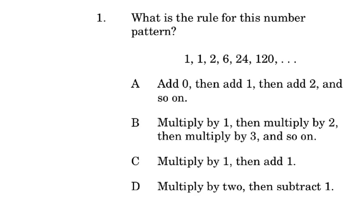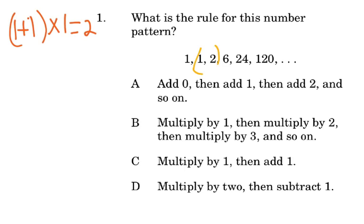What is the rule for this number pattern? We're looking at a sequence question, so we're going to look at the relationship between the terms. So 1 plus 1 times 1 will give us 1 plus 1 equals 2, and 2 times 1 will give us 2. Now taking the next two: 1 plus 2 times 1 more than 1 will give us 2. 1 plus 2 gives us 3, and 3 times 2 gives us 6.